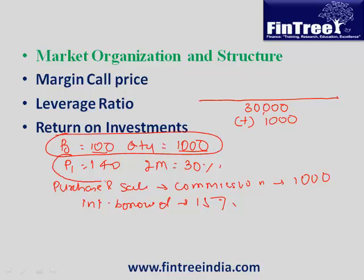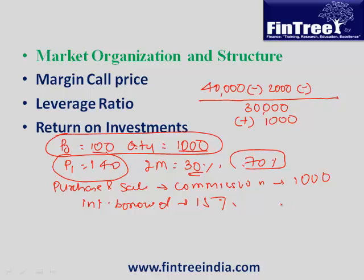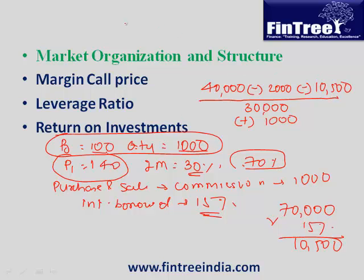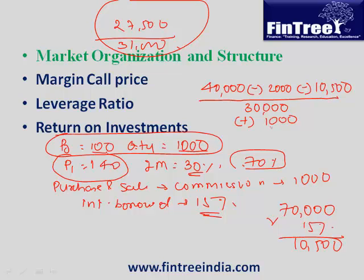Profit calculation: stocks purchased at 100,000 are now worth 140,000 — a profit of 40,000. Subtract brokerage paid twice: minus 2,000. Also, since margin was 30%, you borrowed the remaining 70%, which is 70,000, at 15% interest — that's 10,500 to subtract. Numerator becomes 27,500; denominator is 31,000. Key trick: only the purchase commission goes in the denominator as part of your investment, not both commissions.